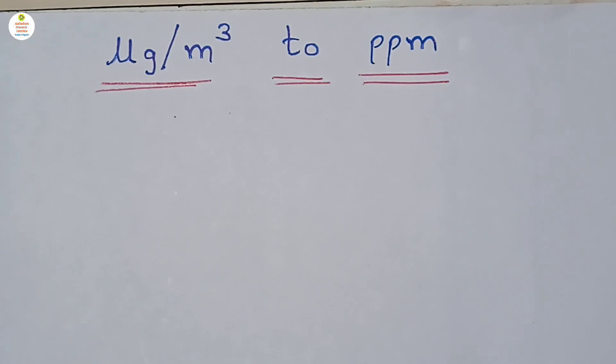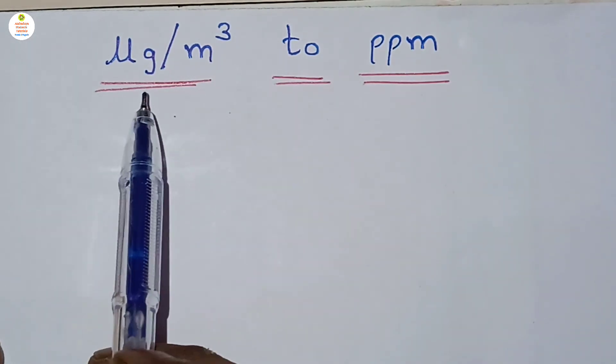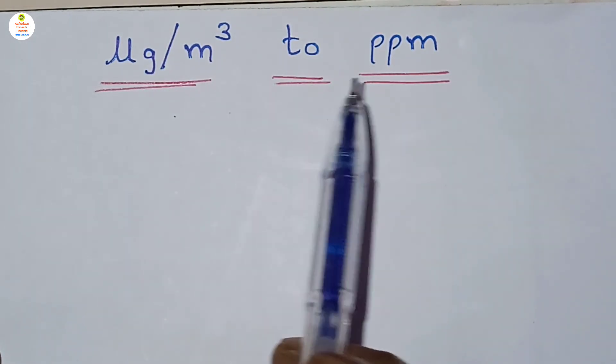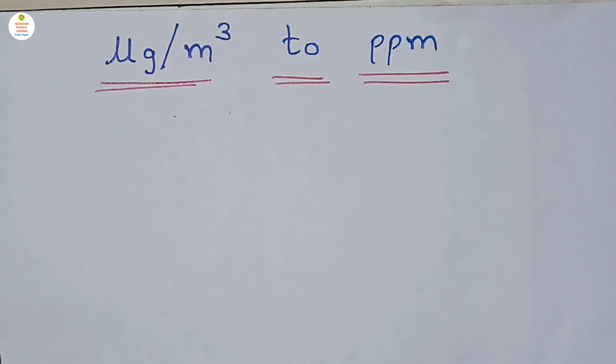Hello students, welcome to my channel. In this video we are going to study about how to convert microgram per meter cube to ppm. PPM full form is parts per million.